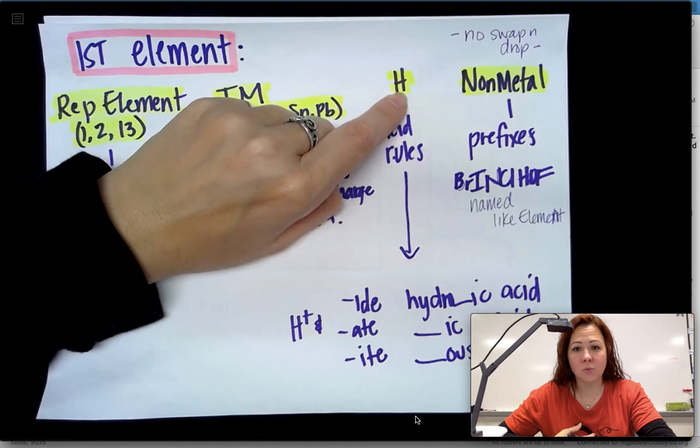If you have a representative element, all you do is name the cation, name the anion—there's nothing special that you need to do. Transition metals are going to get Roman numerals. That's because they don't have the same oxidation number all the time, so when you use those Roman numerals you're going to tell the charge of that metal.